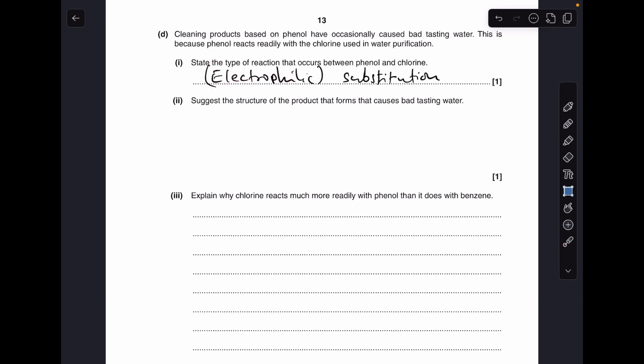Moving on to part D, so the type of reaction that occurs between phenol and chlorine is electrophilic substitution. Now the mark scheme said that the electrophilic was optional, so substitution would be fine there.